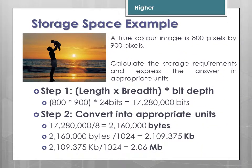Let's do a worked storage example. A true colour image is 800 pixels by 900 pixels. Step one: multiply length × breadth × bit depth. So 800 × 900 × 24 bits = approximately 17.2 million bits. Converting: divide by 8 to get bytes, then divide by 1024 to get kilobytes — about 2109 kilobytes — then divide by 1024 once more to get megabytes. The answer is approximately 2.06 megabytes.